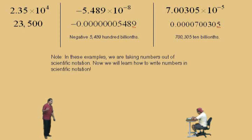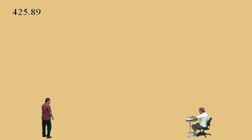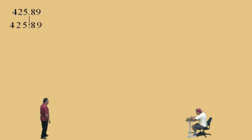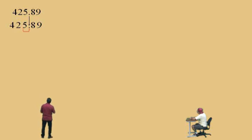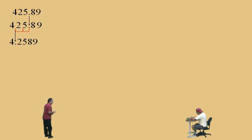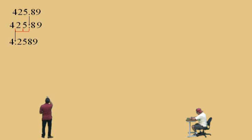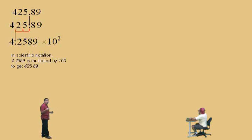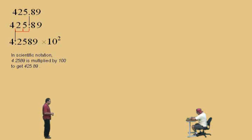Notice that in those examples we were taking numbers out of scientific notation. Now we're ready to put them back in. Take 425.89 — we've got to move the decimal so that we get a number greater than or equal to 1 but less than 10 to the left of the decimal. We move the decimal to the left 2 times, which gives us 4.2589. Since our original number was 425.89, we need to multiply 4.2589 by 10 squared to move the decimal back right 2 places. So in scientific notation: 4.2589 × 10² equals 425.89.